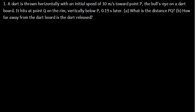A dart is thrown horizontally with an initial speed of 10 meters per second toward point P. The ball's eye on a dart board, it hits at point Q on the rim, vertically below P.